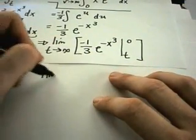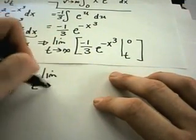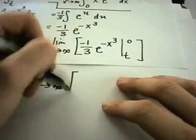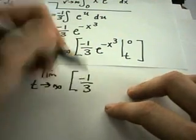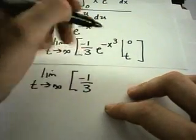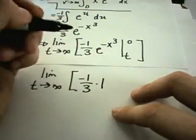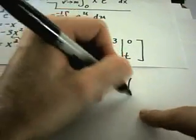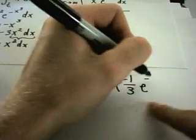So in this case, I'm going to be left with the limit as t goes to infinity. I'll get negative one third, and again, if I plug in zero, I'll get e to the zero which is just one, minus, I'll plug in the t, I'll have negative one third e to the negative t cubed.